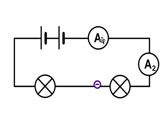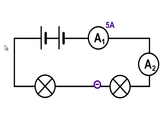So every time it passes through the first ammeter, it also passes through the second ammeter. And if all the electrons do this, it means the current through the first ammeter and the current through the second ammeter is going to be the same. Let's say the current through this ammeter is 5 amps — then the current in this part of the circuit is also going to be 5 amps.